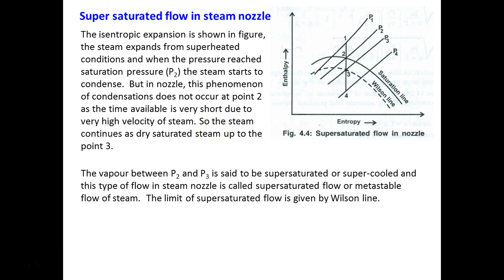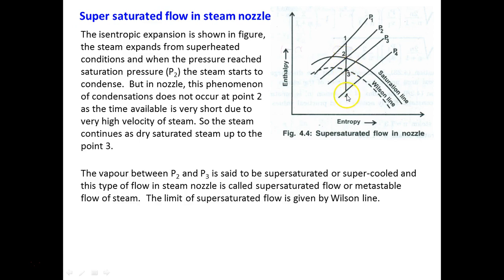The last concept is super-saturated flow in the steam nozzle. On the H-S (Mollier) diagram: above the saturation line the steam is superheated, on the line it is dry saturated, and below the line it is wet steam. For isentropic flow, as superheated steam expands through the nozzle, enthalpy decreases, the steam reaches the dry saturated condition, and then becomes wet steam with increasing moisture content.